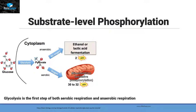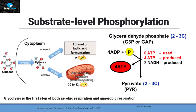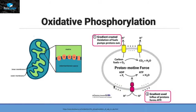Substrate-level phosphorylation usually occurs inside the cytoplasm by the process called glycolysis. Because glycolysis is the first step of both aerobic and anaerobic respiration, in the process of glycolysis four ATP molecules are generated. The next type is oxidative phosphorylation — in oxidative phosphorylation, protons and electrons create a kind of gradient inside the cell which produces a proton motive force that helps ATP synthase to convert ADP into ATP.